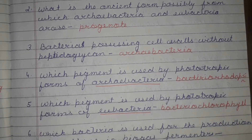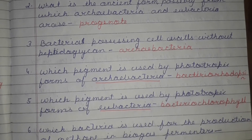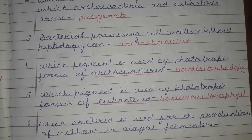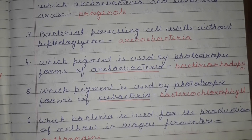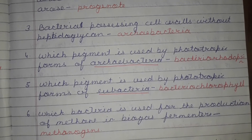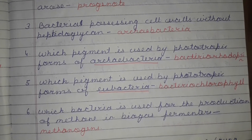Which pigment is used by phototrophic forms of Eubacteria? It is bacteriochlorophyll.